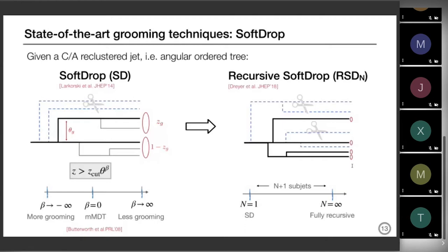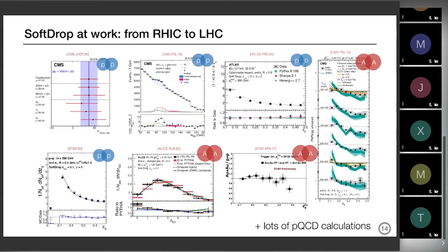At the end of the day you end up with four subjets in your jet. You can choose how many subjets you want via the parameter N: if N equals one you have regular soft drop with two subjets at the end; if N equals infinity you've gone through the full jet in the fully recursive mode with an unknown number of subjets. N equals two would be perfect for top decay because you have three prongs. The two motivations for this were pileup and also multi-prong decays. Soft drop has been extensively used from RHIC to the LHC, from proton-proton to heavy ions, and is part of almost every jet analysis.